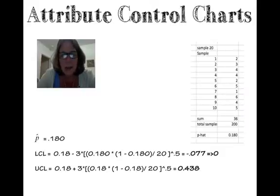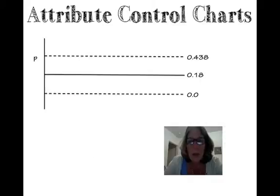we get that the lower control limit is at minus 0.077, and the upper control limit is at 0.438. If we look at that, the negative 0.077 is no such thing as that low of a negative proportion, so we go ahead and put that at 0. When we create the control limits, they'll be from 0 to 0.438, with 0.18 in the middle. Then we can start plotting those proportions.